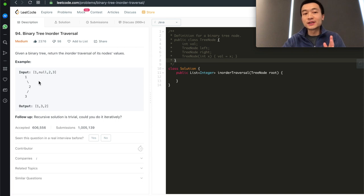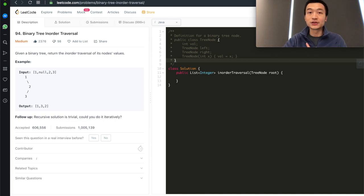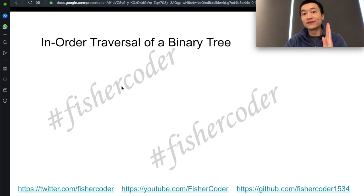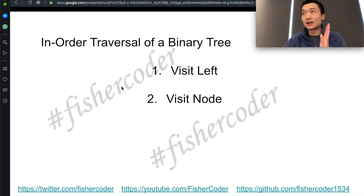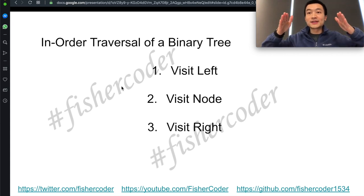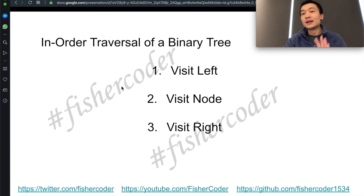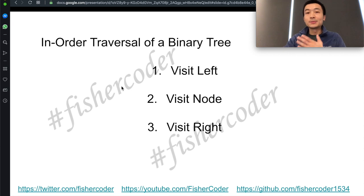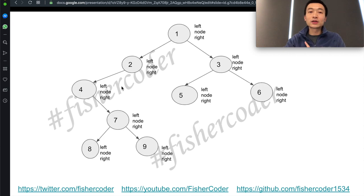The problem description: given this tree, return the output 1, 3, 2. Before we dive in, let's quickly understand what in-order traversal means. In-order traversal of a binary tree means we visit the left node first — that's the first step. Second, we visit the current node itself. Last, we visit its right child. So the order is: left, node, right — L, N, R. Now we can walk through one example.